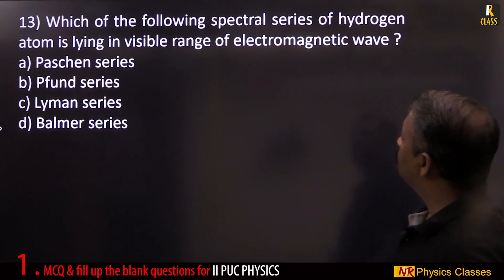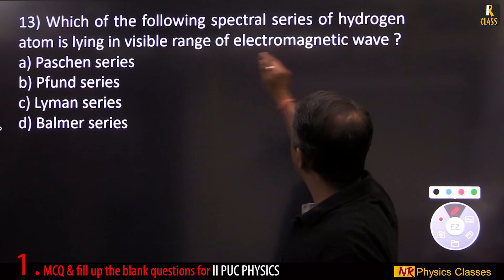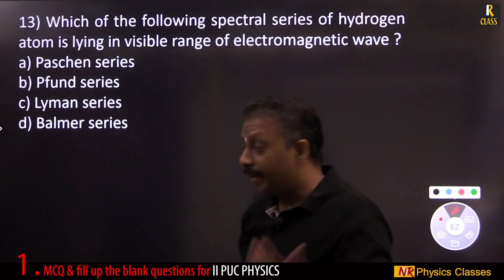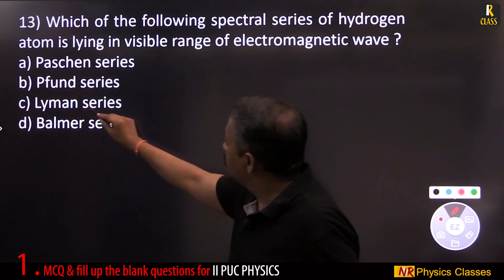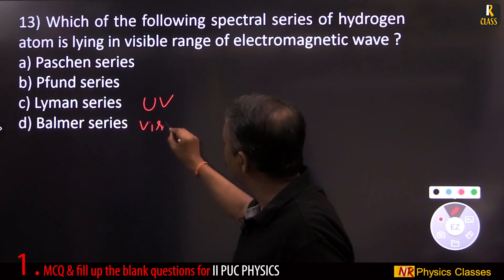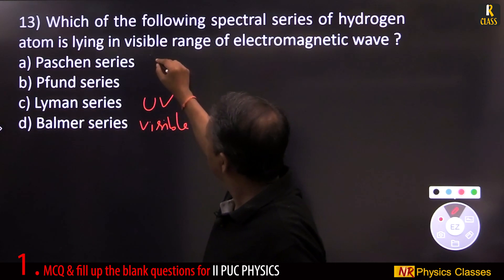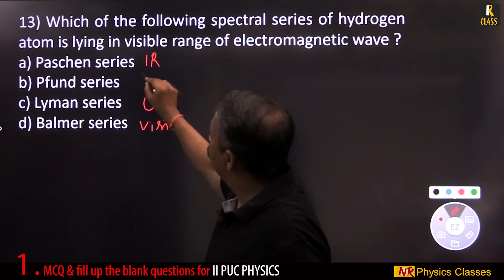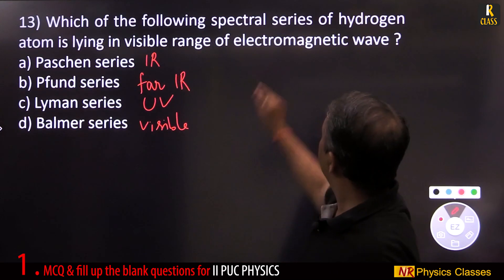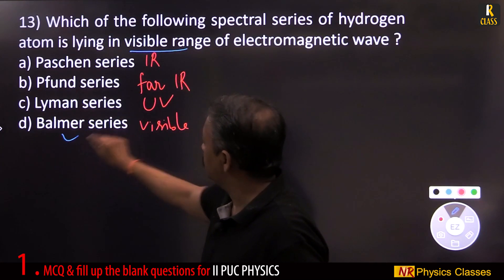Which of the following spectral series of hydrogen atom is lying in visible range of electromagnetic wave? Recall Lyman-Balmer-Paschen. Lyman series: UV. Balmer: visible. Paschen series: IR. Pfund: IR. It is visible, therefore Balmer series.